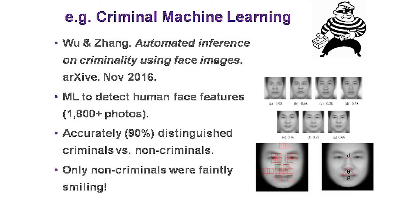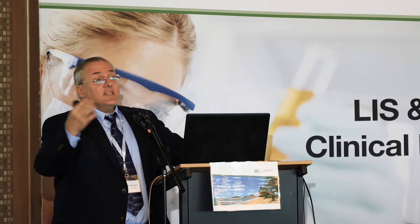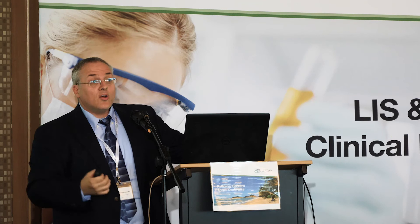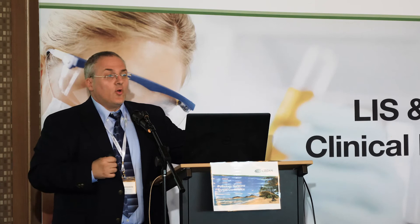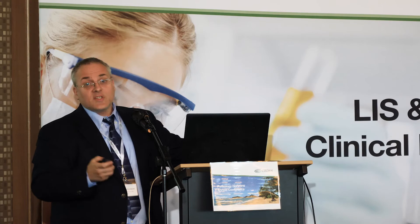There was a criminal machine learning algorithm — a lot of hype around it. Two Chinese researchers looked at over 1,800 facial images and used a deep learning approach. Based on that, they were able to distinguish a criminal from a non-criminal with high accuracy. They got it published until people started looking at what was really going on — criminals don't smile, and regular people do. So this is just a good smile detector. We don't want to make that kind of mistake when we apply this to pathology. We don't want smile detectors; we need stuff we can depend on.